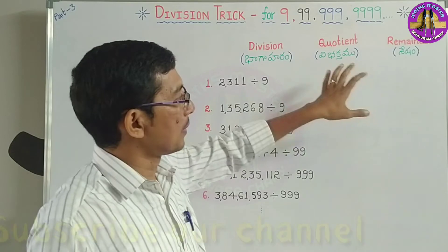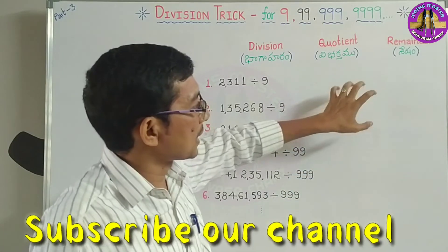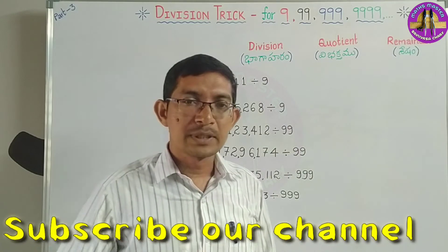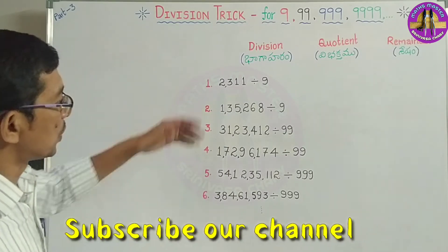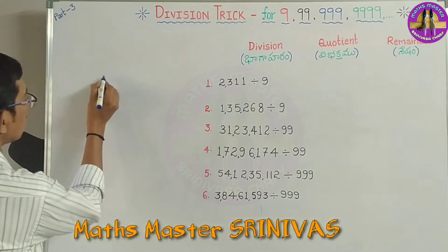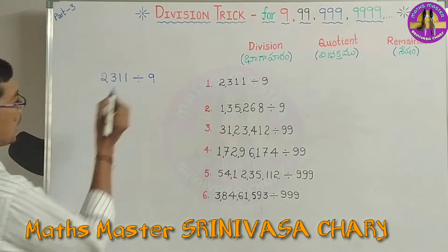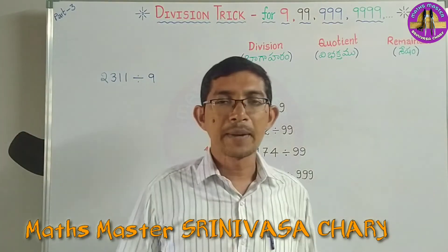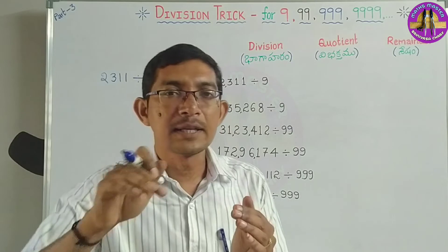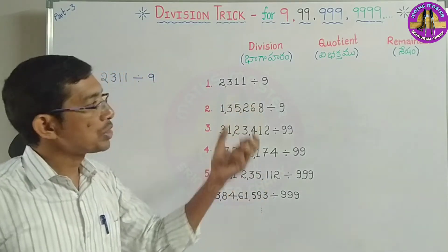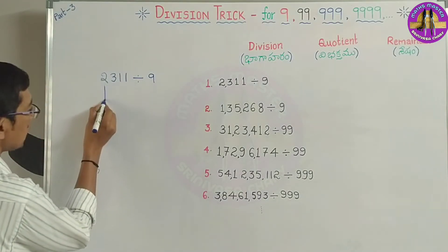We will cover quotient and remainder concepts in this video for time-saving in competitive exams. The first problem is 2311 divided by 9. We will do the ninth division — a non-terminating, recurring decimal — and observe the quotient and remainder using the same steps.